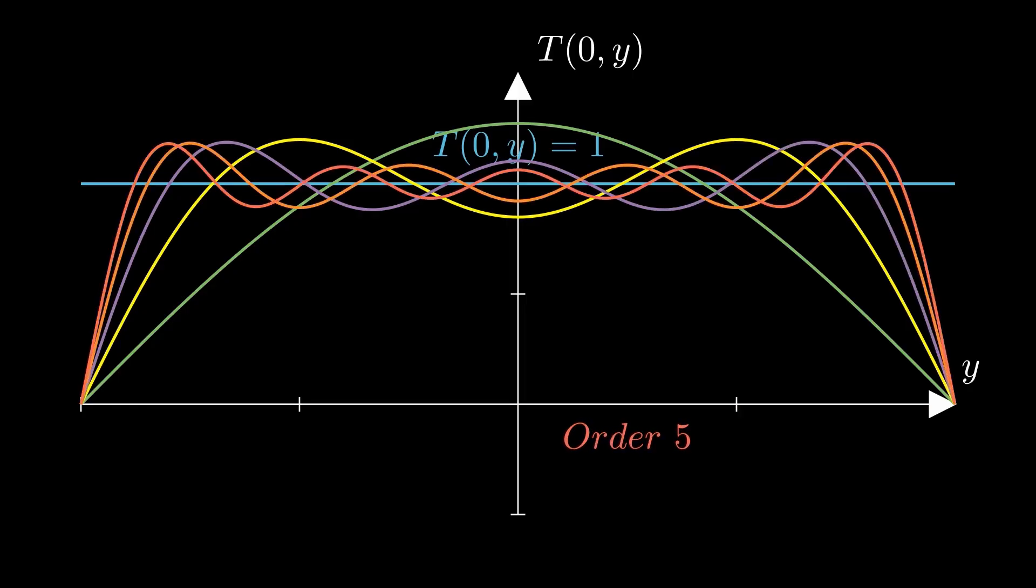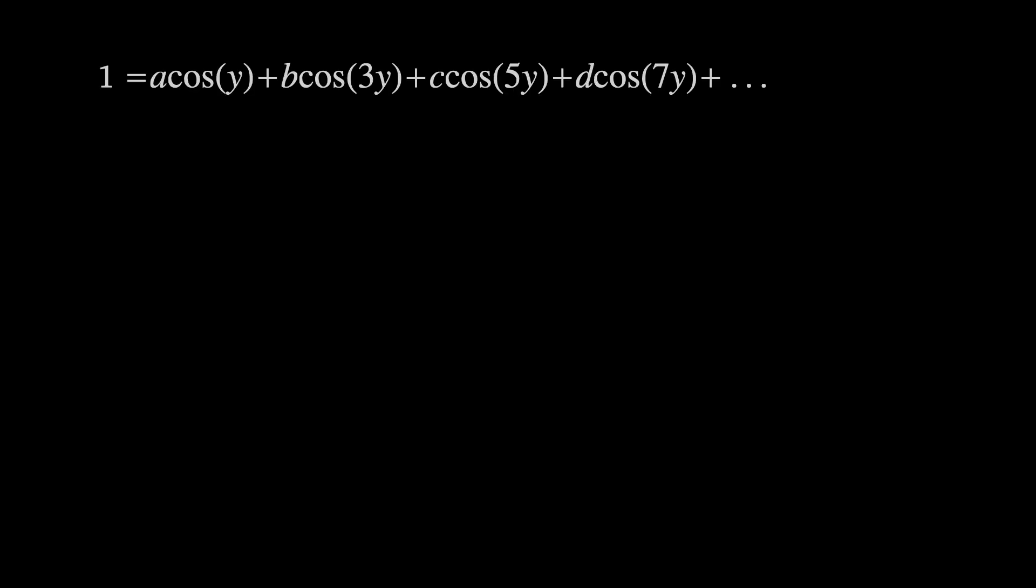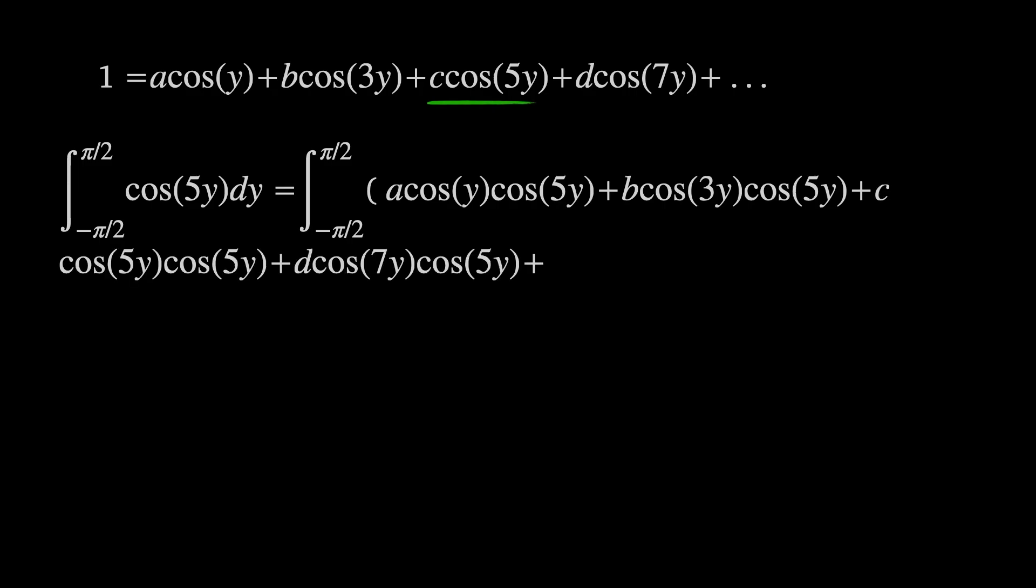Fourier's approach was genius. Realizing that integrating cosine of mx times cosine of nx is 0 if m is not equal to n and π over 2 if n equals n. If you want to have a go about proving this try using the product identity for cosines. This gave Fourier a way to calculate any coefficient he wanted. Suppose you want to calculate c the coefficient of cosine of 5y. You can multiply both sides by cosine 5y and integrate from minus π over 2 to plus π over 2.